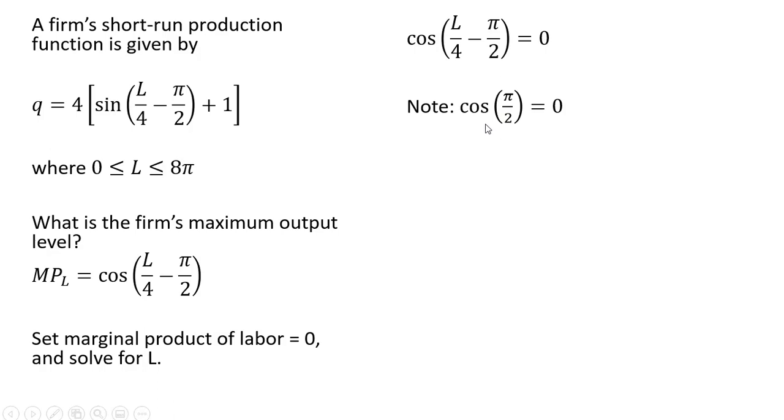One thing to note here is that the cosine of π divided by two equals zero. So what we're going to try to do is get what's in parentheses here equal to π divided by two. So the way I do that is I take what's in parentheses, and I want that to equal π divided by two.